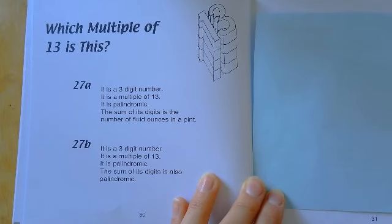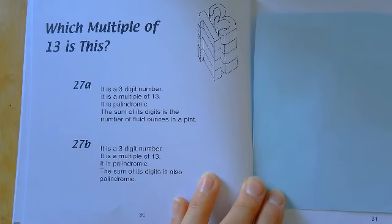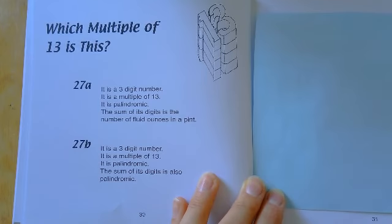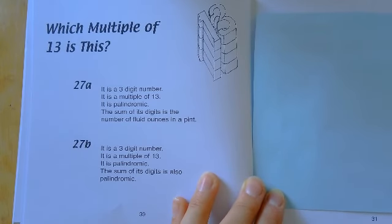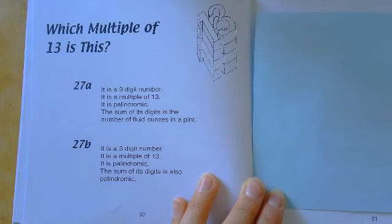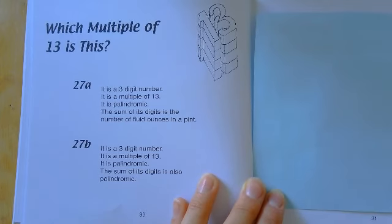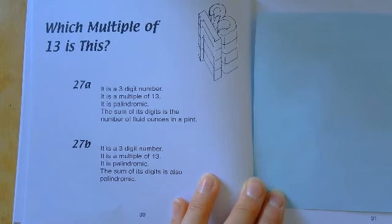For part b, again it's three digits and it's a multiple of 13 and it's palindromic. But this is very interesting: the sum of its digits is also palindromic. I think that's a really nice question. So we want a number that's the same forwards or backwards, and when we add up its digits we get a number which is palindromic. I think that's a really nice question.